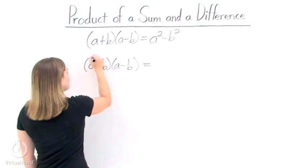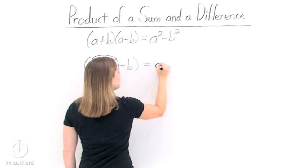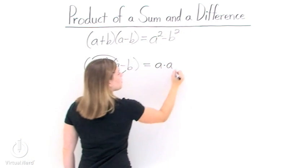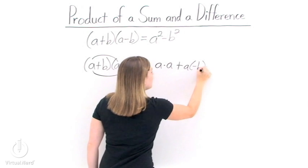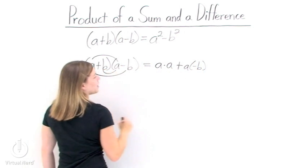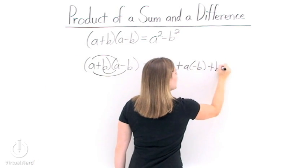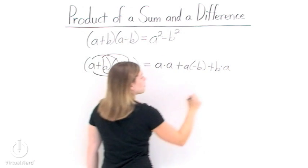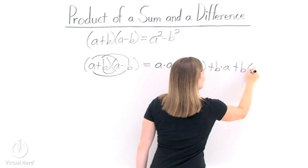So to FOIL, we take our first terms and multiply them together, a times a, then our outer terms, a times negative b, then multiply our inner terms. We have b times a, and finally our last terms, b times negative b.